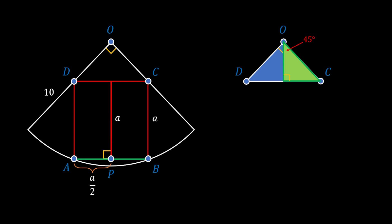Since the line DC is equal to A, the half of this green triangle will have a base of A over 2. And since it is an isosceles right triangle, its height must also be A over 2. Now we will pull the line from the point O to the point A. This line represents the radius of our circle, which we already know is equal to 10.